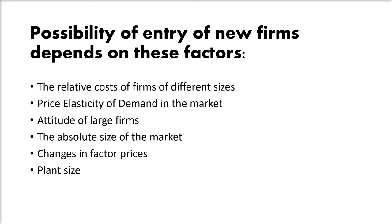Secondly, price elasticity of demand in the market: the more elastic the market demand, the lower the price that can be charged by the established firms without attracting entry. Thirdly, the attitude of large firms: large firms may allow entry, or they may set a limit price, or adopt an aggressive policy and try to drive out existing small firms. Fourthly, the absolute size of the market: the larger the size of the market, the lower will be the entry-preventing price. However, a large market may also lead to an aggressive price policy on the part of large firms.